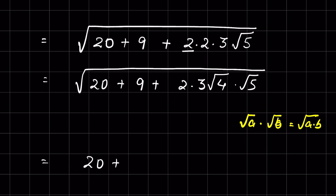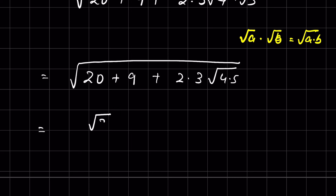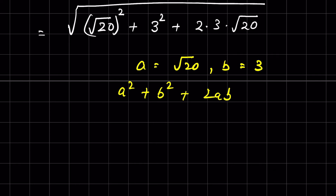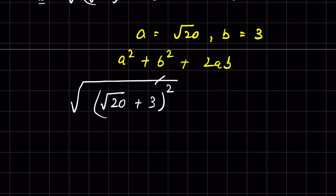This becomes 20 + 9 + 2 × 3 × √20. We write 20 as (√20)² and 9 as 3². So the expression is (√20)² + 3² + 2 × (√20) × 3. This is in the form a² + b² + 2ab = (a + b)², so we write it as (√20 + 3)². Under the square root, we get √((√20 + 3)²).